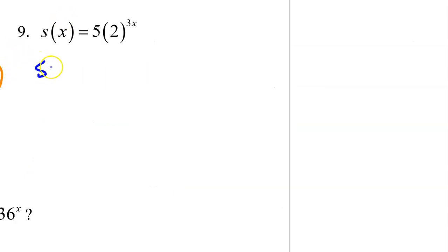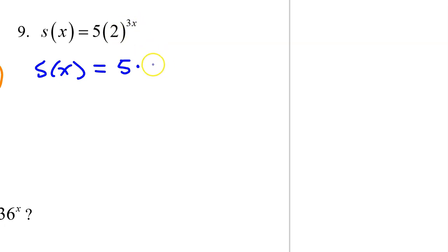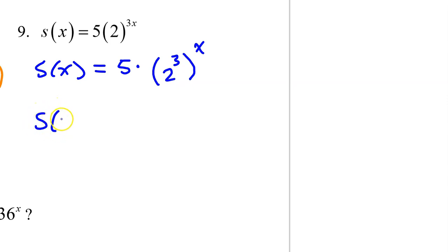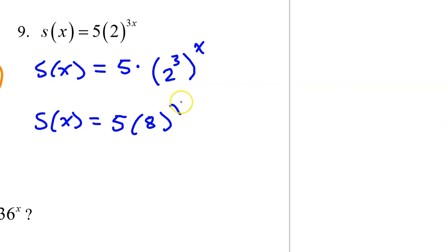For number 9, we have this extra 5 out in front — don't pay it any mind, it's just along for the ride. Focus on the 2 to the 3x power, which we can rewrite as 2 to the 3rd power all raised to the x power. 2 to the 3rd power is 8, so we end up with 5 times 8 to the x power.